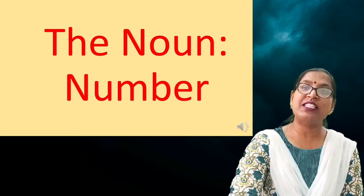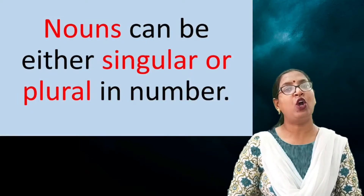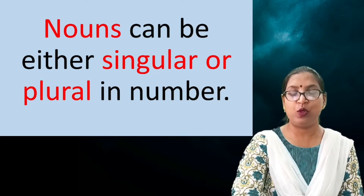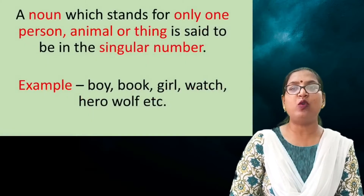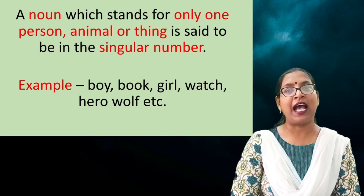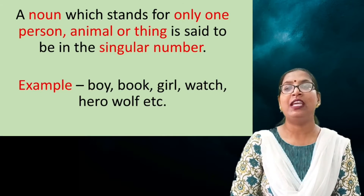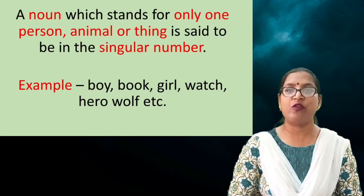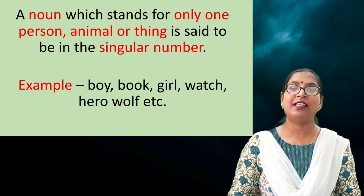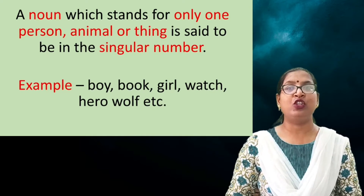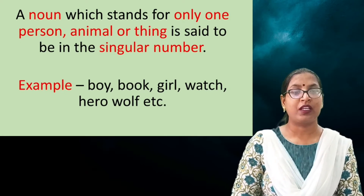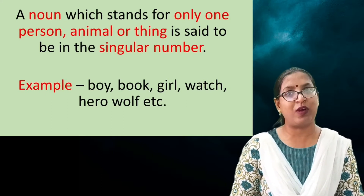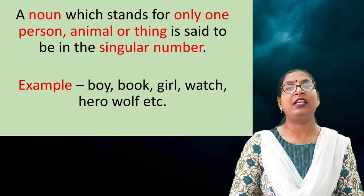Nouns can be of two types — it can be either singular or plural in number. A noun which stands for one person, animal or thing is said to be in the singular number. When we talk about only one person, only one object or only one animal, we use a singular noun. For example, 'boy' — here it means we are talking about only one boy, so this is singular in number.